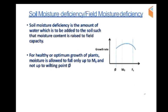Soil moisture deficiency or field moisture deficiency is the amount of water which must be added to the soil such that moisture content is raised to field capacity. We have existing soil moisture content, and we need to achieve field capacity. When we increase soil moisture to field capacity, we use soil moisture deficiency.